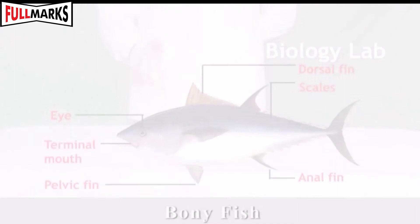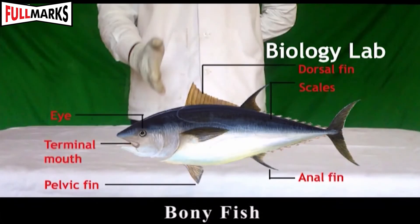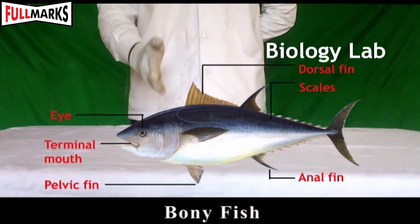Three: Bony Fish. It possesses a vertebral column and belongs to phylum Chordata, subphylum Vertebrata. Features of phylum: mouth is terminal; body is spindle-shaped; strong vertebral column; bony endoskeleton; gills covered by an operculum for respiration; air bladder present which helps in giving buoyancy and floating or swimming in water.